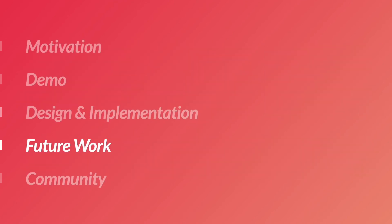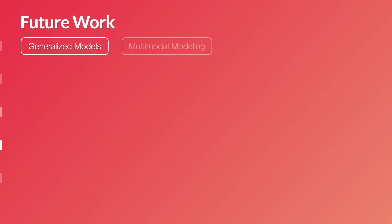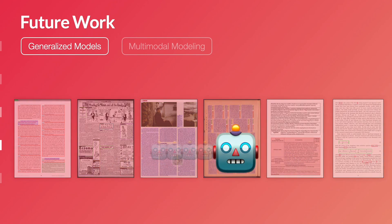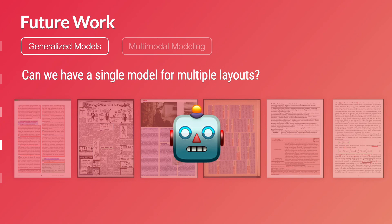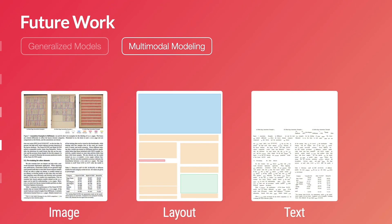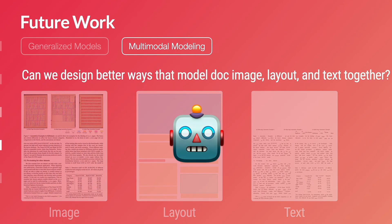I'd also like to share our thoughts on possible future directions. The first is building more generalized models. Currently we train different models for each dataset, which is still not ideal. As more generalized and large models become available in deep learning, it will be very interesting to study how a single model can work on multiple or even unseen layouts. Another direction is modeling documents using different signals altogether — document images, layouts, and text are usually separately modeled, and it will be interesting to investigate better mechanisms to model them jointly.